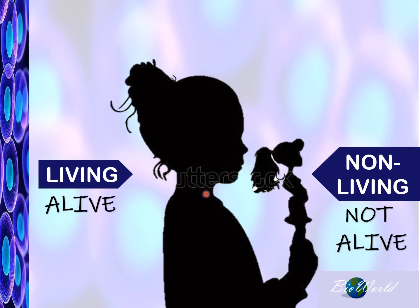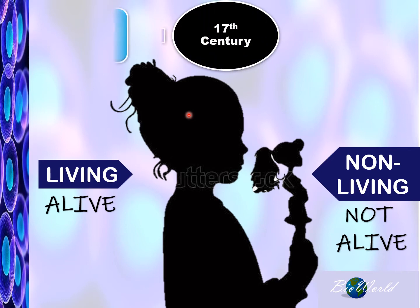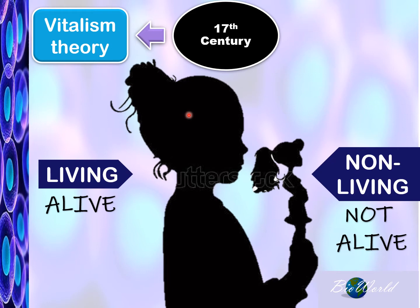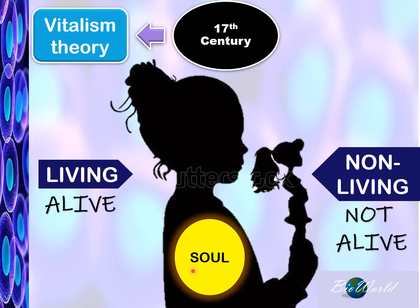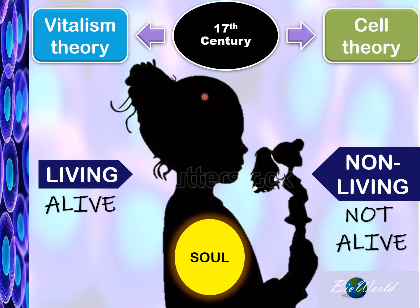The question now is: what keeps us alive? Before the 17th century, there was a theory called the vitalism theory, which says we have a mysterious energy within us that keeps us alive. Today we call that energy the soul. But scientifically we cannot show the soul, so scientists continued to investigate. After the 17th century, when microscopes were introduced, scientists came up with the cell theory to explain the concept of being alive. Join me in BioWorld today to explore the cell theory.